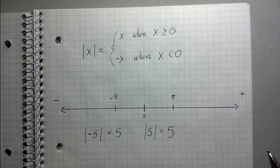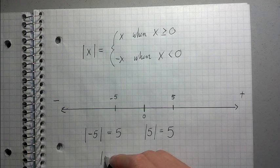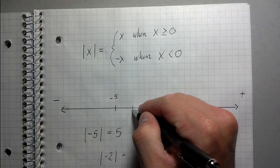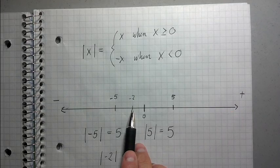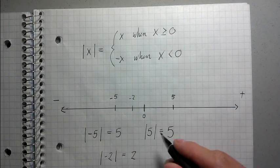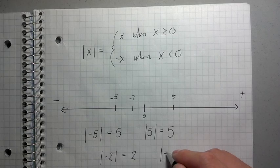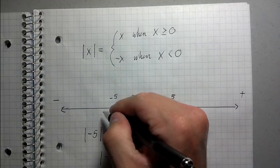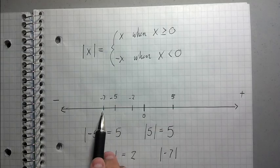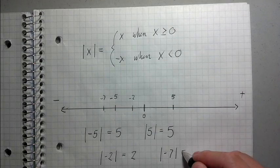What's the absolute value of negative 2? Well, here's negative 2. How many steps away from 0 is negative 2? 2. What's the absolute value of negative 7? Well, here's negative 7. Isn't that 7 steps away from 0? Yep, so it's just 7.